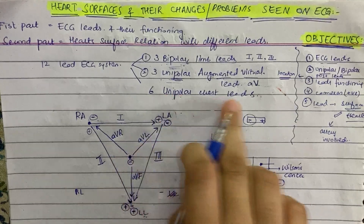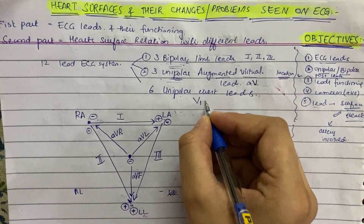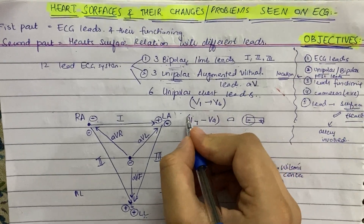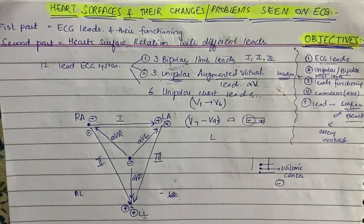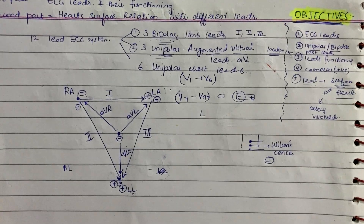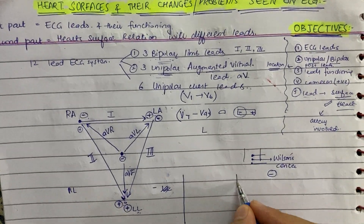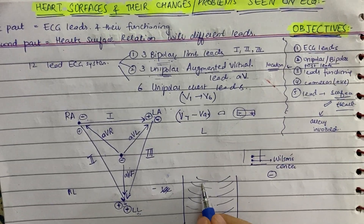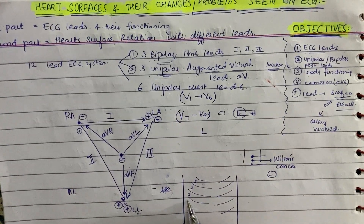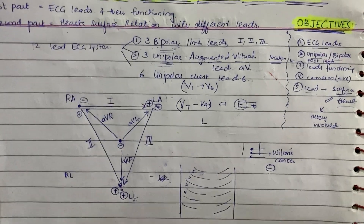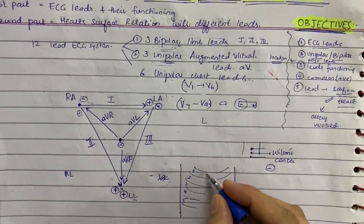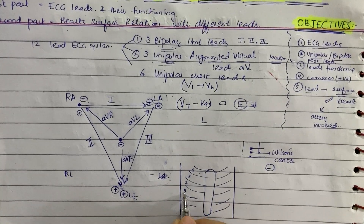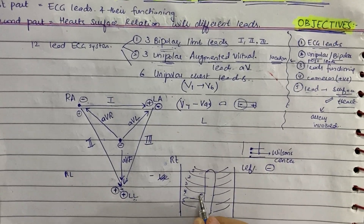Now the unipolar chest leads, V1 to V6 — and also V7 to V9 for posterior leads, which I'll discuss shortly. Imagine the person's chest with ribs on both sides. There is the first, second, third, fourth, and fifth intercostal space, with the sternum in the middle. In the fourth intercostal space on the right side of the sternum, we attach lead V1. On the left side of the sternum in the same fourth intercostal space, we attach lead V2.